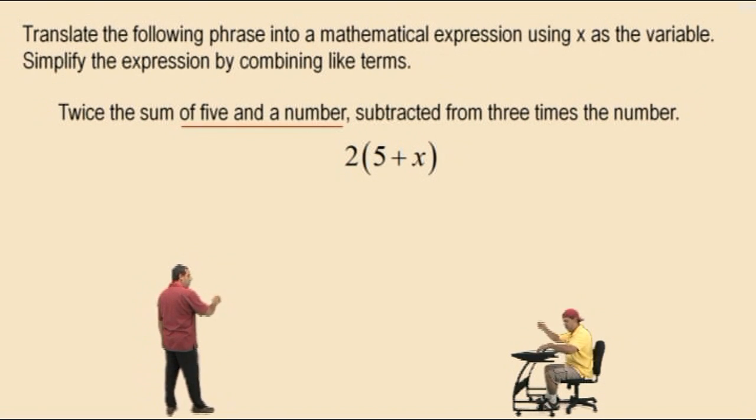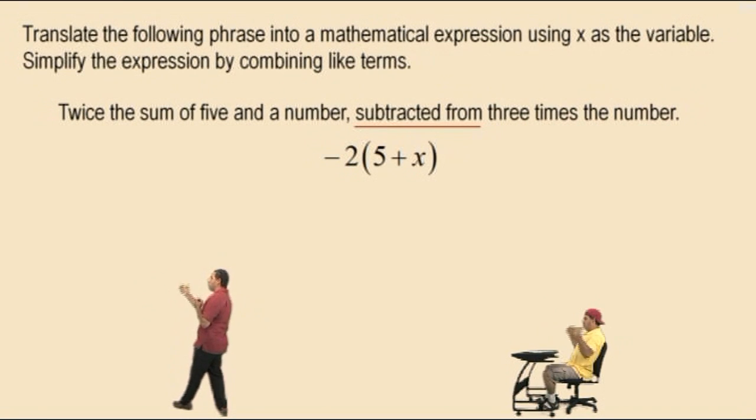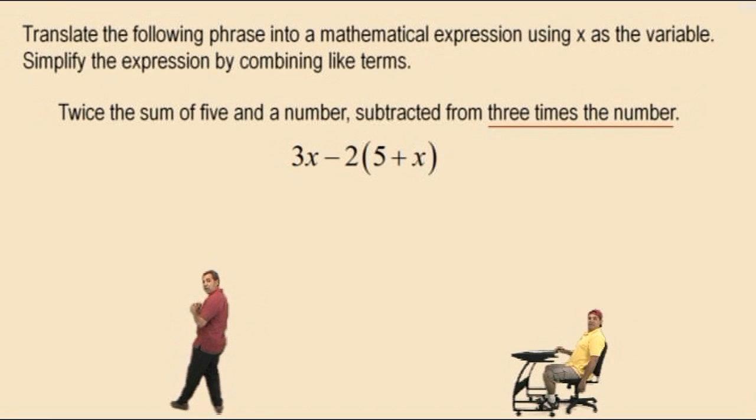Now, so we have twice the sum of 5 and a number, now it's subtracted from...now notice where the subtraction was placed, you're taking away twice the sum away from something, so the subtraction goes in front. Now what are we taking it away from? Well, we're taking it away from 3 times the number. And 3 times the number is the 3x, right? So we're taking away from the 3 times the number. And there it is right there.